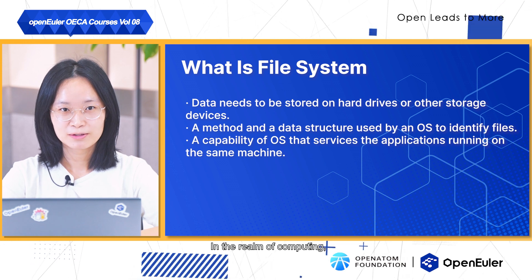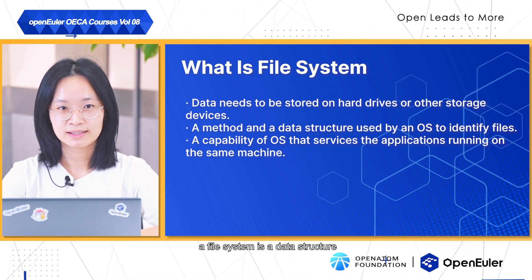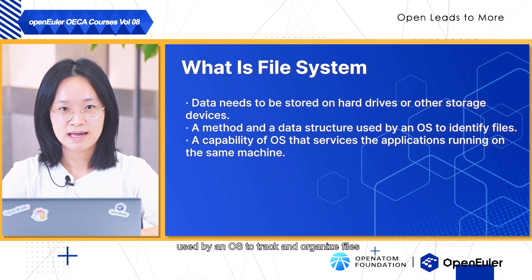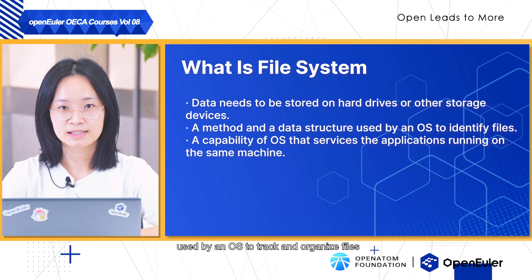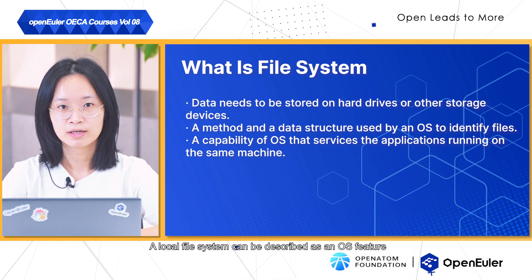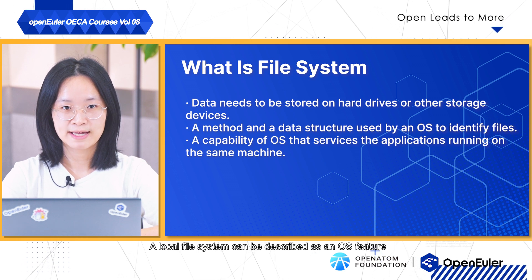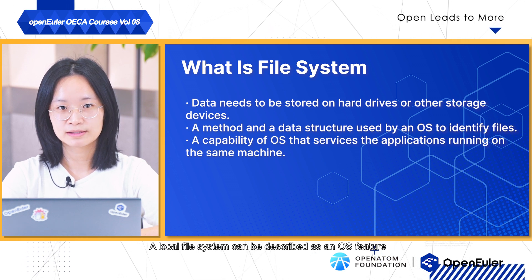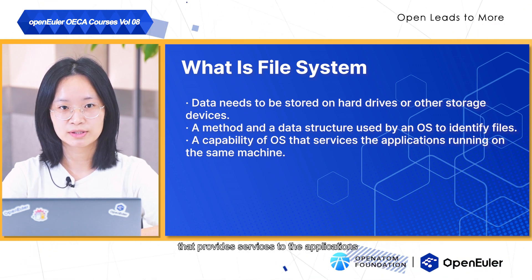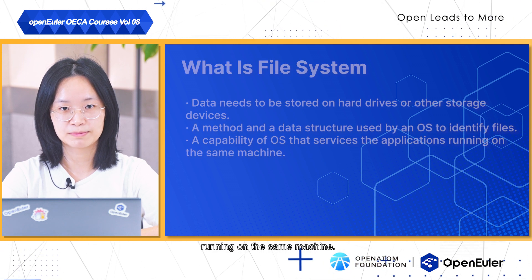In the realm of computing, a file system is a data structure used by the OS to track and organize files on a storage medium or partition. A local file system can be described as an OS feature that provides services to the applications running on the same machine.